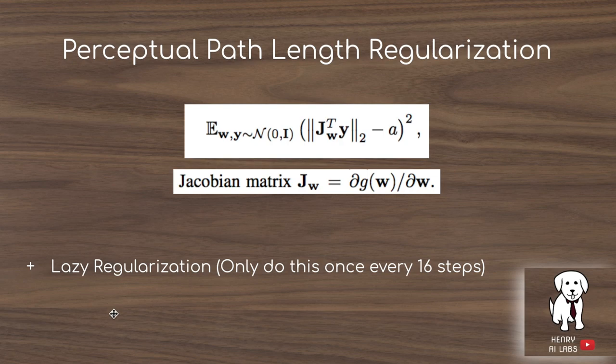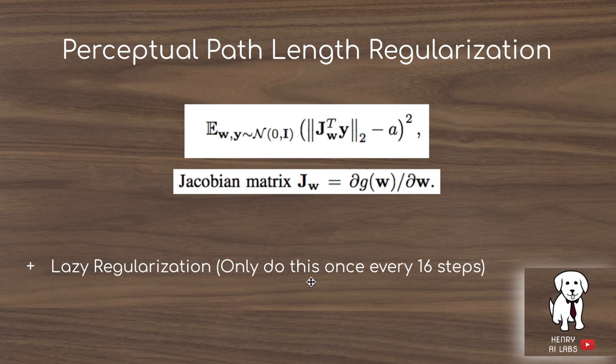Lazy regularization refers to the fact that computing this Jacobian matrix with respect to the latent vector is a very computationally heavy process. So they find that they can only add this to the loss function every 16 steps. Usually the generator is trained with a logistic loss or Wasserstein loss, plus R1 regularization, and then this lazy regularization is added roughly once every 16 steps — so they're not doing the regularization on every step of training.